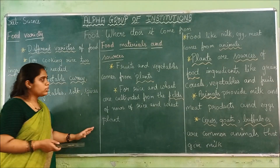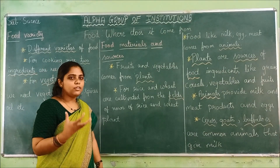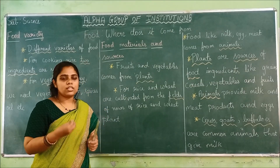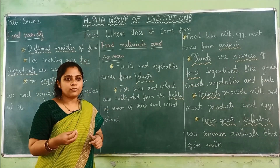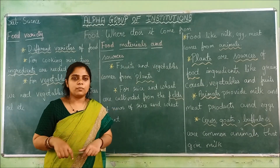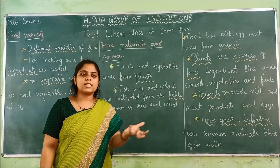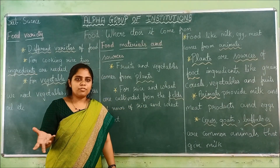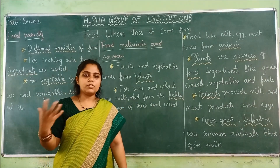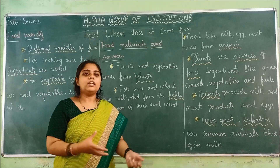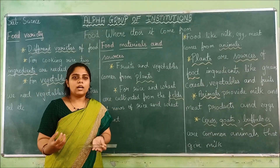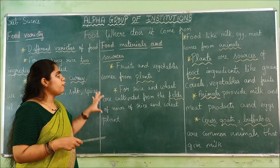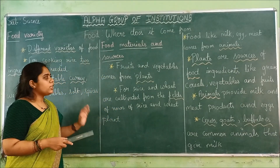Next we are going to see about food materials — that is the ingredients — and their sources. Sources means where does it come from. Rice comes from plants. Egg — does it come from a plant? No. It comes from a hen, which is an animal. Milk also we get from animals. So now we are going to see the different sources and the food materials.